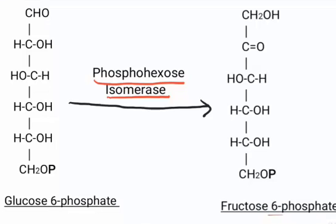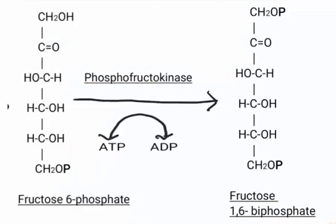Glucose-6-phosphate in the presence of the enzyme phosphohexose isomerase gets converted into its isomer, fructose-6-phosphate. Now fructose-6-phosphate in the presence of the enzyme phosphofructokinase gets converted into fructose-1,6-bisphosphate. Thus another phosphate molecule is attached at the first carbon of the fructose molecule, and another ATP is consumed, forming ADP.